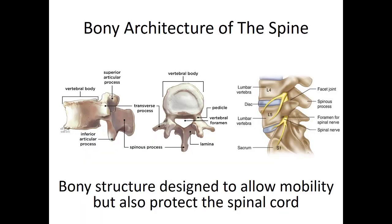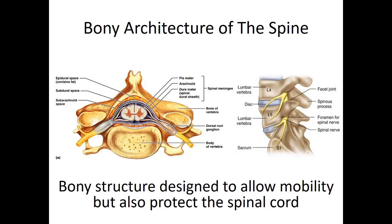Looking at the bone architecture of the spine, the bones making up the spinal column are fairly complicated. There's a vertebral body and a hole where the spinal cord is housed. In between the vertebral bodies we have discs, which add padding between the vertebral column. The nerves exit the spinal cord through the foramina right near those discs. This bony structure is designed to allow for mobility while also clearly protecting the spinal cord.